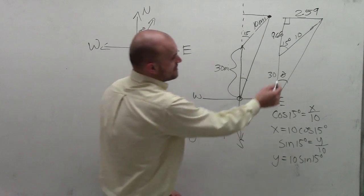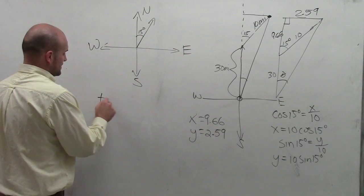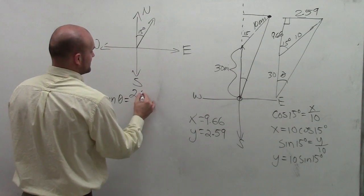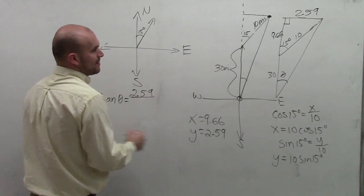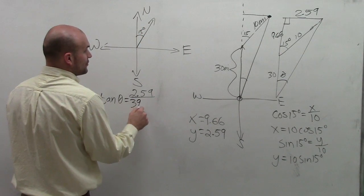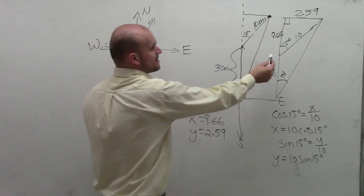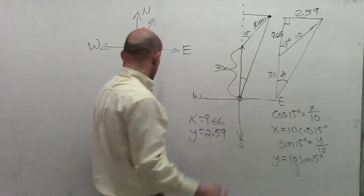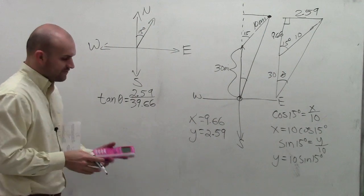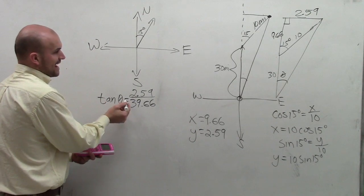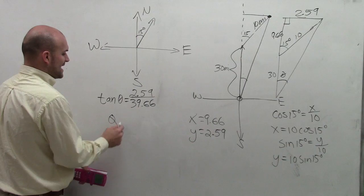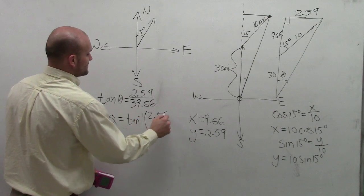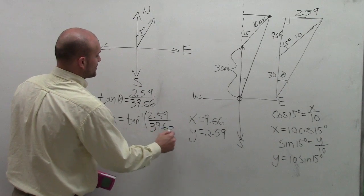So now to be able to figure out what my theta is, I can write tangent of theta is equal to the opposite side, which is 2.59, divided by the adjacent side, which is 39.66. Because if from here to here is 9.66, then here to here, and here to here is 30, then that whole length is 39.66. So now to be able to find the angle, if I say tangent of my angle is equal to opposite over hypotenuse, that means my angle is now equal to inverse tangent of 2.59 divided by 39.66.